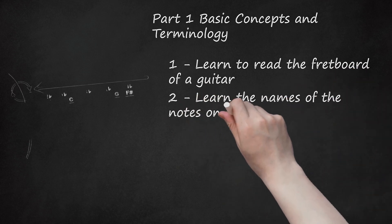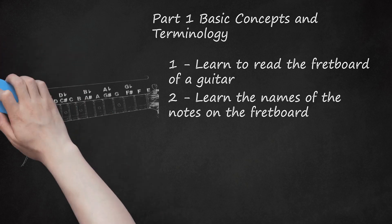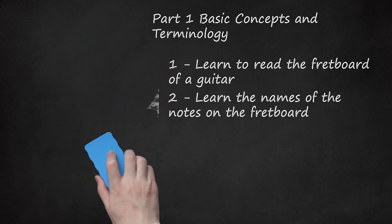Learn the Names of the Notes on the Fretboard. Every single fret on the guitar plays a note that has a name. Luckily, there are only 12 notes — the names just repeat over and over. Note that some notes have two different names. After this, the notes start at A again and repeat. Learning the positions of the different notes takes a little too long to cover in this article — if you need help, try our article on the subject.